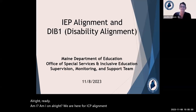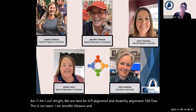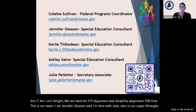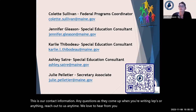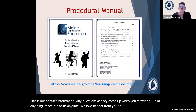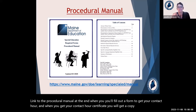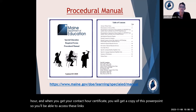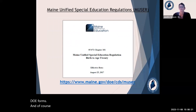We are here for IEP alignment and disability alignment, DIB One. I am Jennifer Gleason, here with Julie, our super wrangler. This is our contact information — reach out to us anytime when you're writing IEPs. The link to the procedural manual will be sent at the end when you fill out the form to get your contact hour certificate, along with this PowerPoint so you can access these links. The procedural manual is great to have next to you, as are the DOE forms and MUSER.